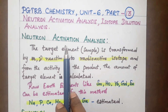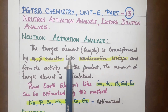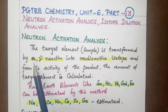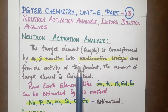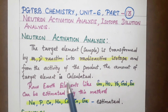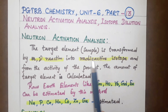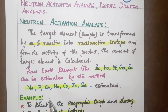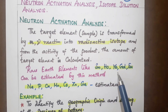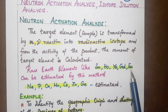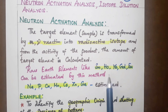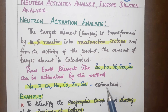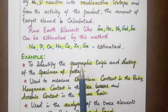First, Neutron Activation Analysis: we use the neutron-gamma reaction to convert elements into radioactive isotopes. From the product, we calculate the amount of element. This method is useful for rare earth elements such as samarium, polonium, ytterbium, gadolinium, and europium, as well as sodium, phosphorus, calcium, manganese, cobalt, zinc, and germanium.